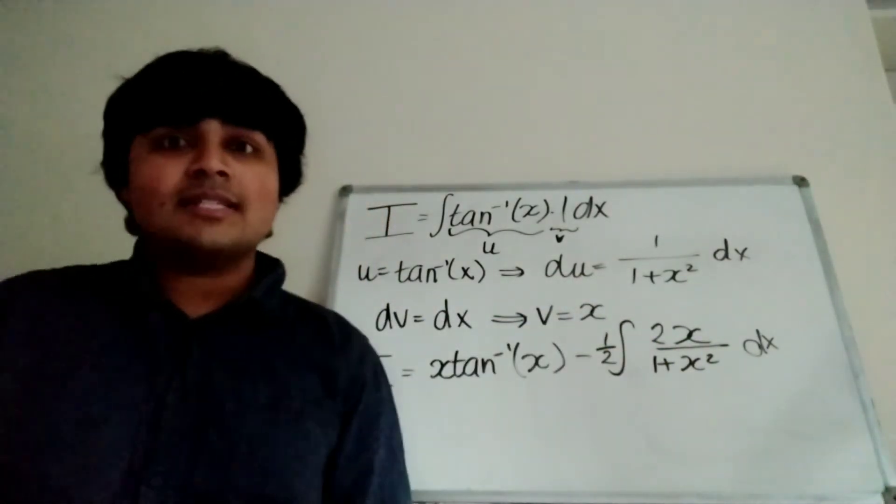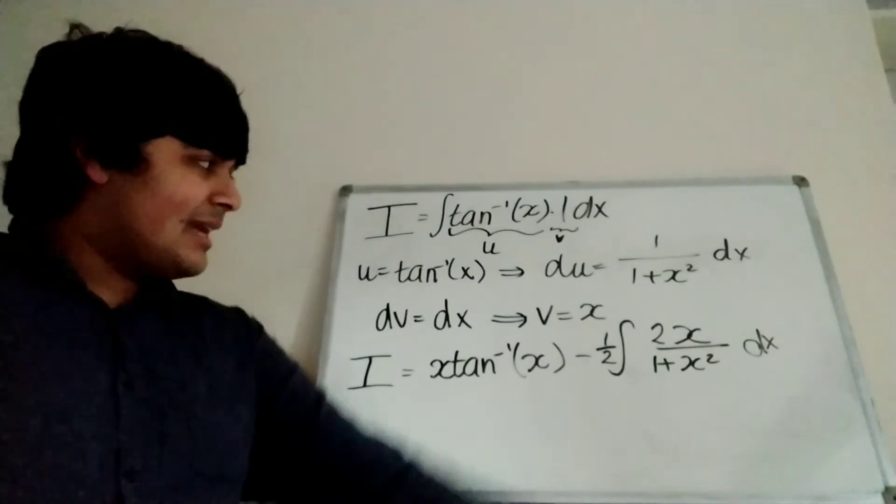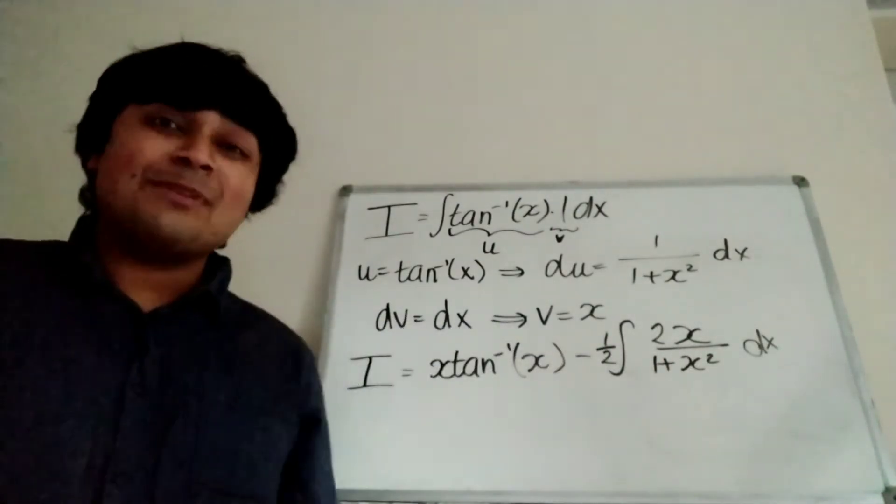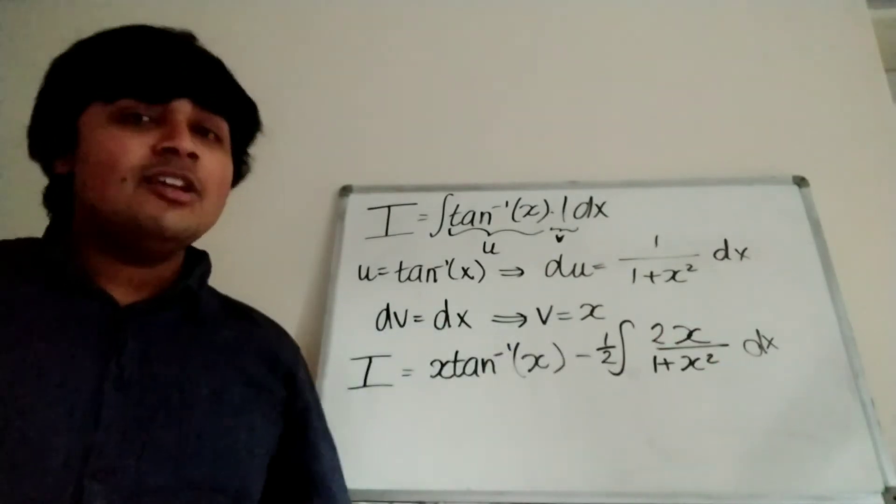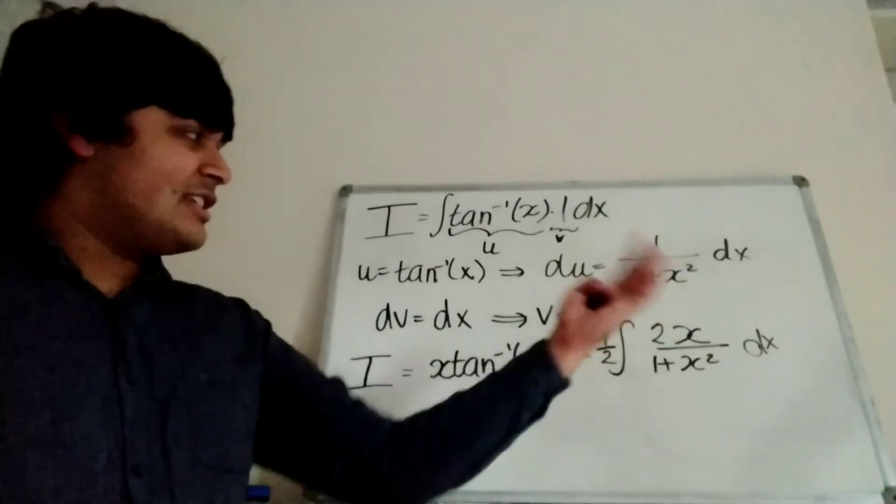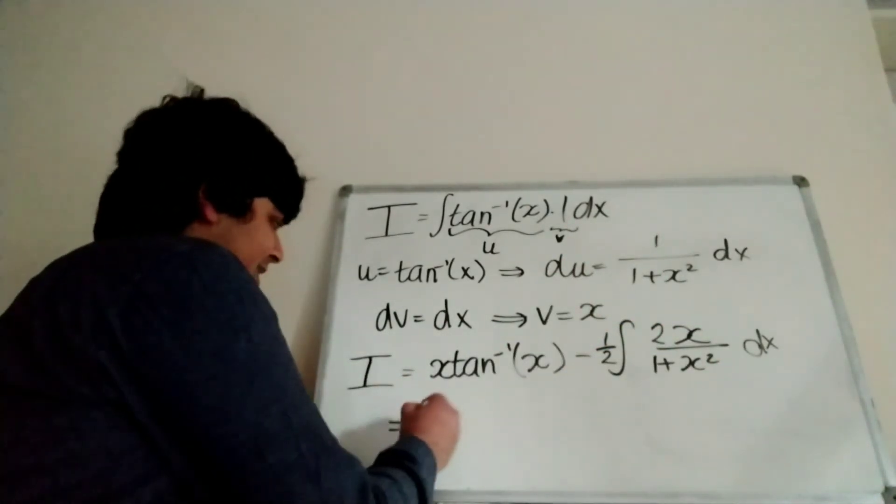So now I'm integrating 2x all over 1 plus x squared. And now we notice if we differentiate 1 plus x squared, that gives us 2x. So that actually gives us the numerator. So this is actually just a standard integral.